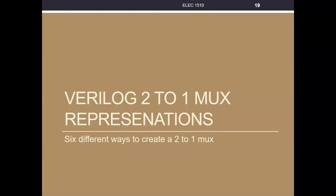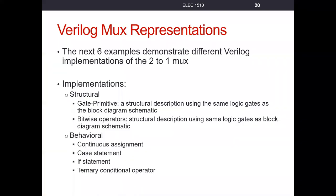This is part two of our lecture series on multiplexers. We're going to talk about how to represent two-to-one multiplexers in different ways using Verilog. There's a slide on how to do this with a gate primitive method and a bitwise operator — this is more what we call a structural method. We'll also look at continuous assignment, case statement, and if statement. These are going to be behavioral methods.